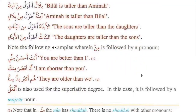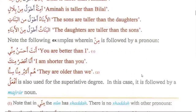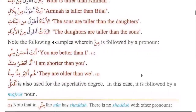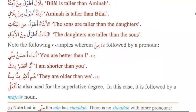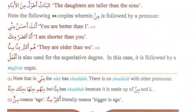When we have a preposition min, the af'alu is representing the comparative degree. We are using the majrur form of the pronoun after min. Now you will learn the superlative degree.